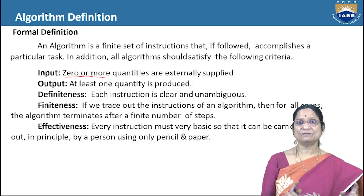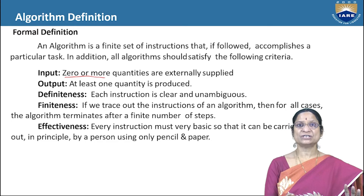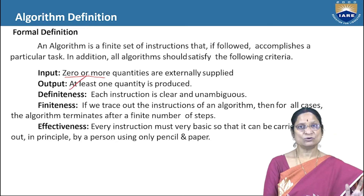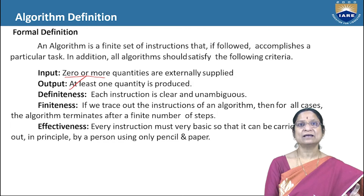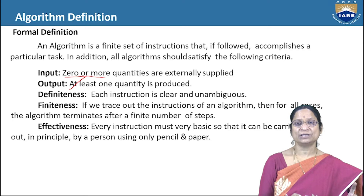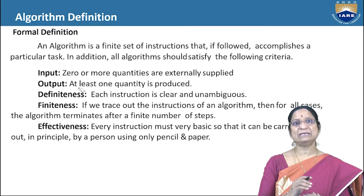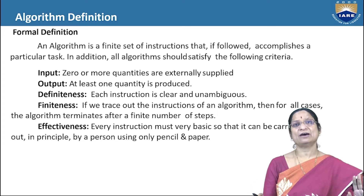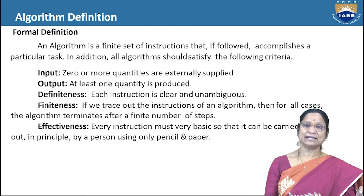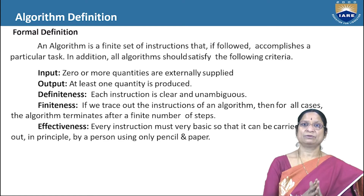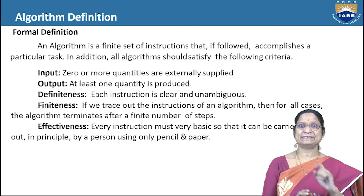The second characteristic is output. Always, if we are solving a problem, we need at least one output to verify that the solution is correct. If there is no output, we cannot verify how it was solved or what the importance of the process is. Therefore, at least one quantity of output must be produced — input may not be there, but output must always be present.